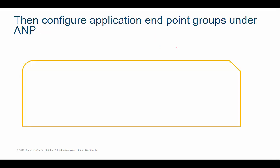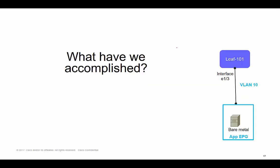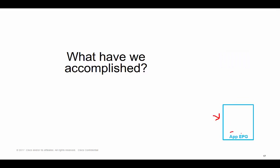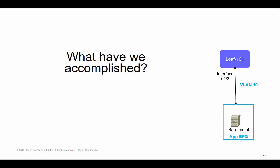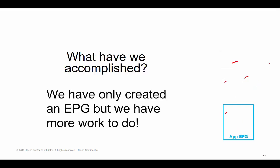So this is our visual representation of what we've accomplished. Step one: I created the application profile. Step two: I created one EPG — the Student One App EPG under the app profile. But we have remaining steps to complete, because I need to define where that EPG resides: the leaf switch, the interface, and the VLAN ID to be used.